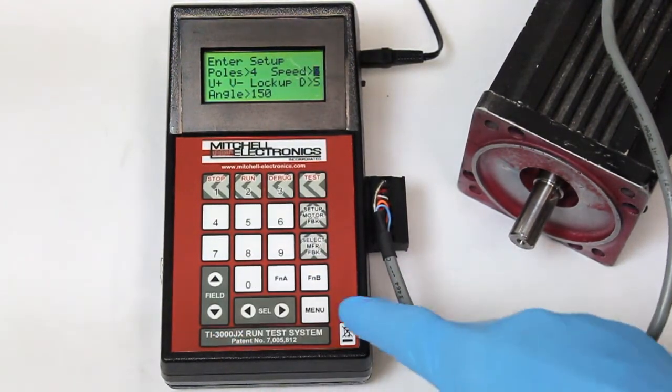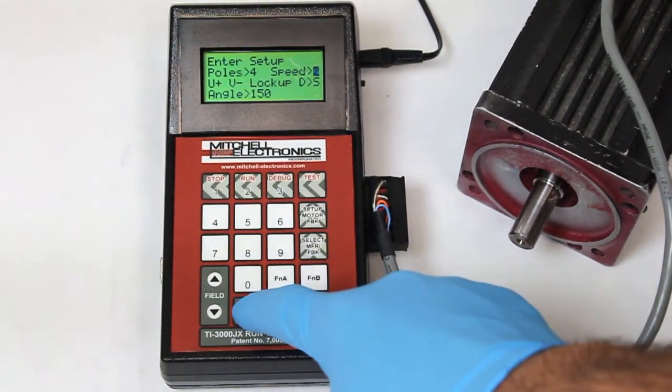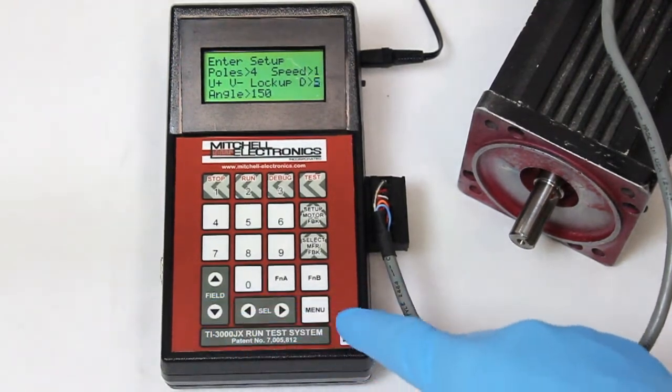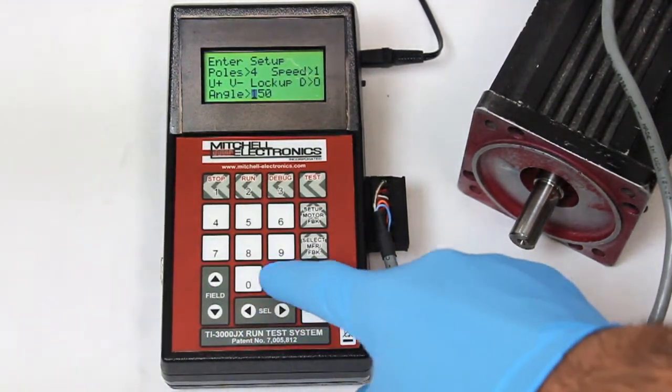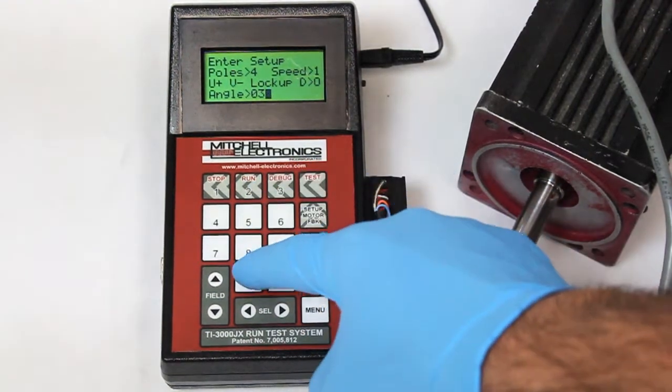This motor has four poles, the resolver is one speed, their directions are opposite, and the plus u minus v lockup angle is 30 degrees.